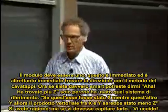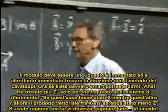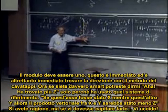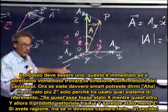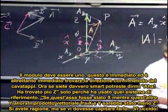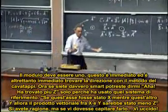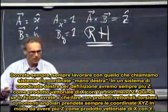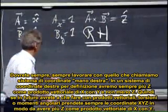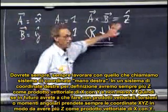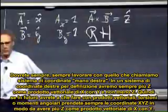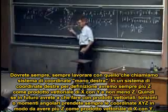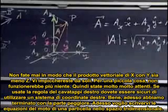Now, if you are very smart, you may say: aha, you find plus z only because you have used this coordinate system. If this axis had been x and this one had been y, then the cross product of x and y would be in the minus z-direction. Yeah, you're right, but if you ever do that, I will kill you. You will always, always have to work with what we call a right-handed coordinate system. By definition, that is one whereby the cross product of x with y is z, and not minus z. Never, ever make it such that x cross y is minus z.